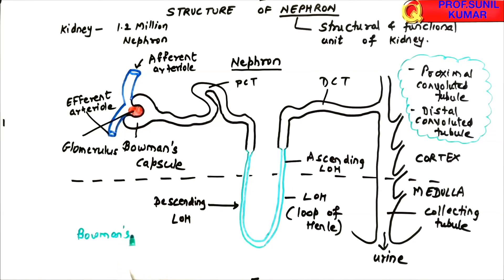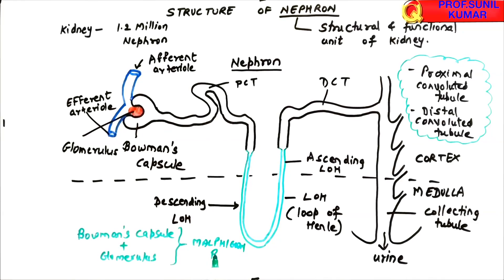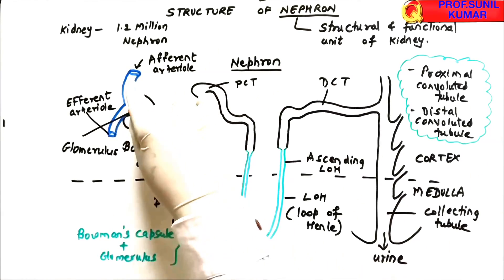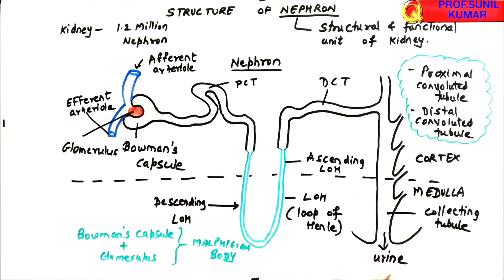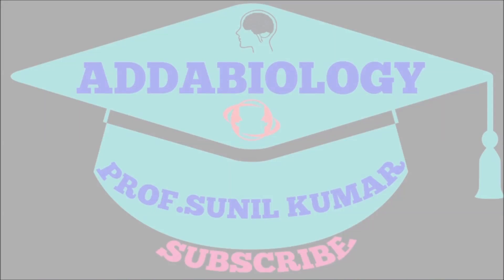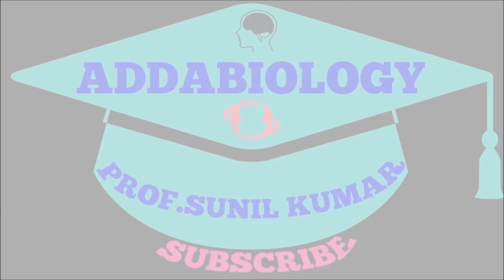The Bowman's capsule and glomerulus together make the Malpighian body, which is also called the renal corpuscle or Malpighian corpuscle. There are also peritubular capillaries surrounding the nephron, which I have not shown in the diagram as it would make it untidy. I hope you have understood the diagram of the nephron — please like, subscribe, and share with your friends. Thank you very much.